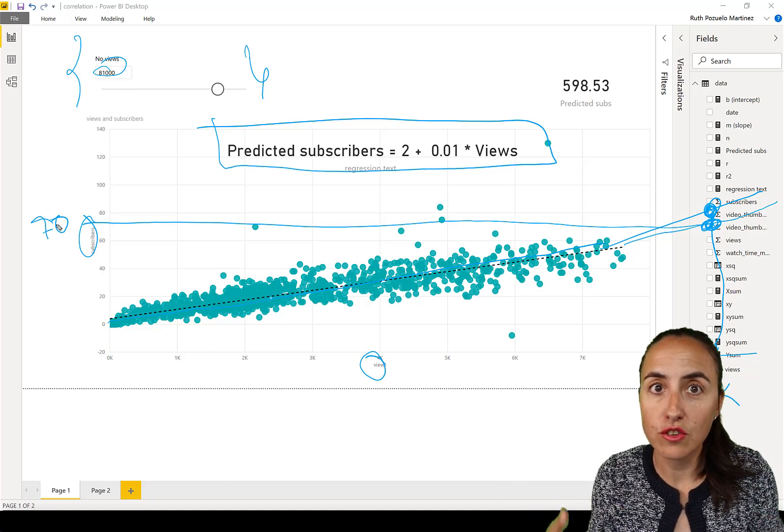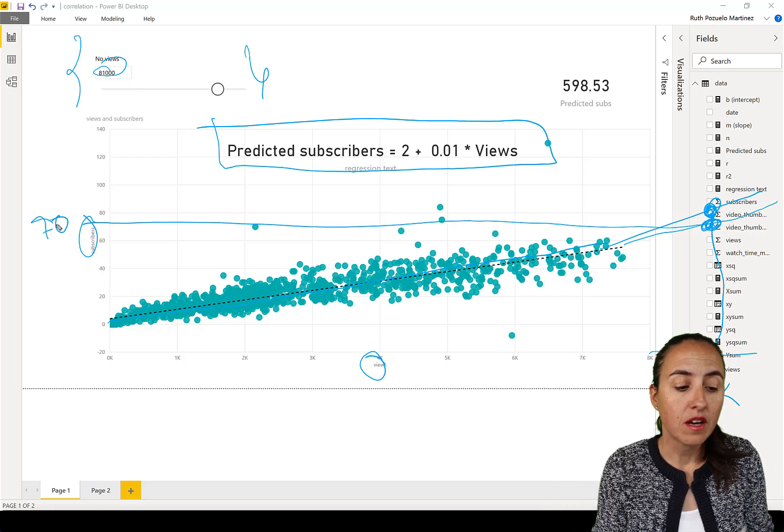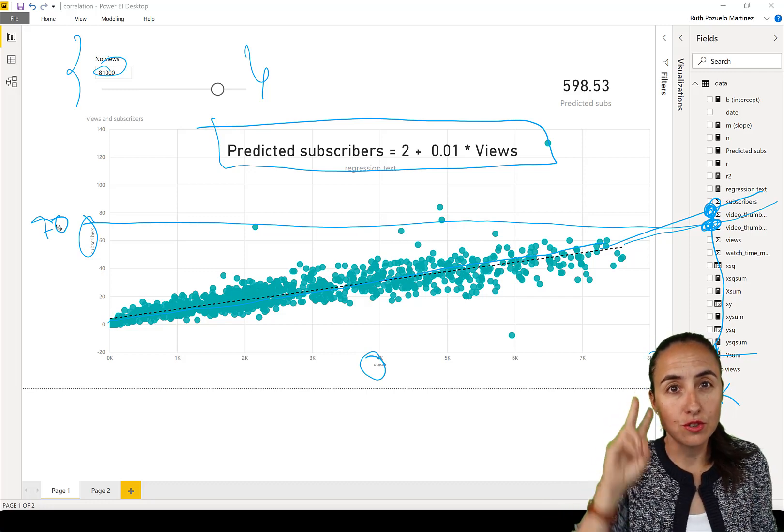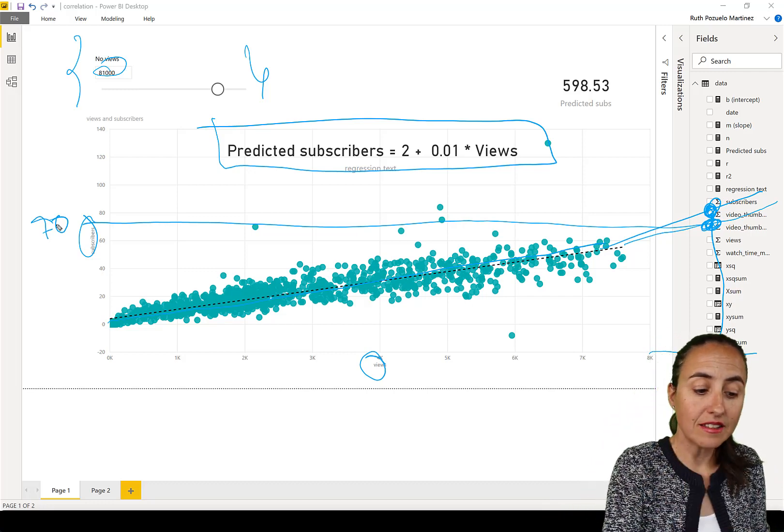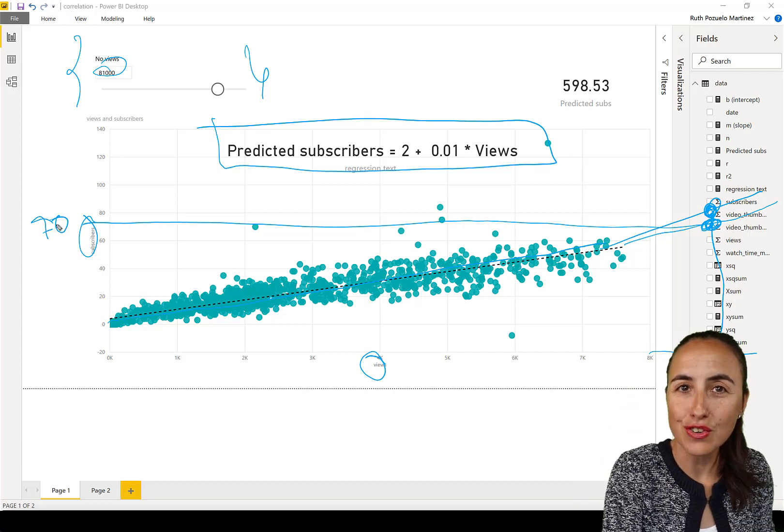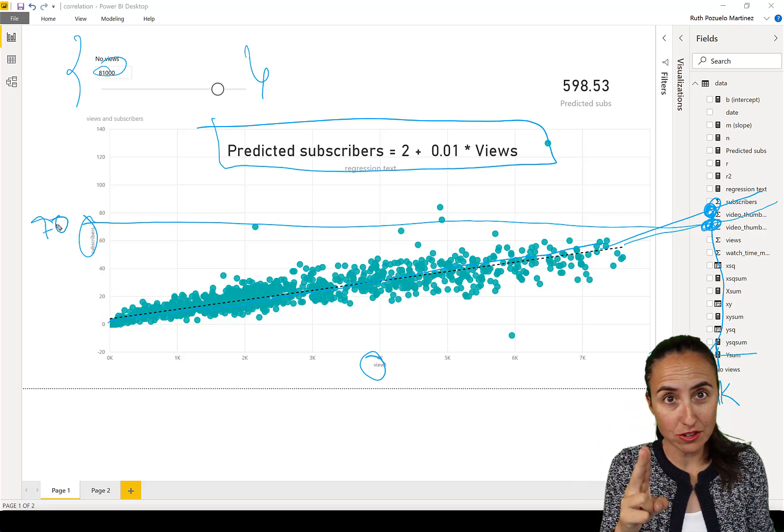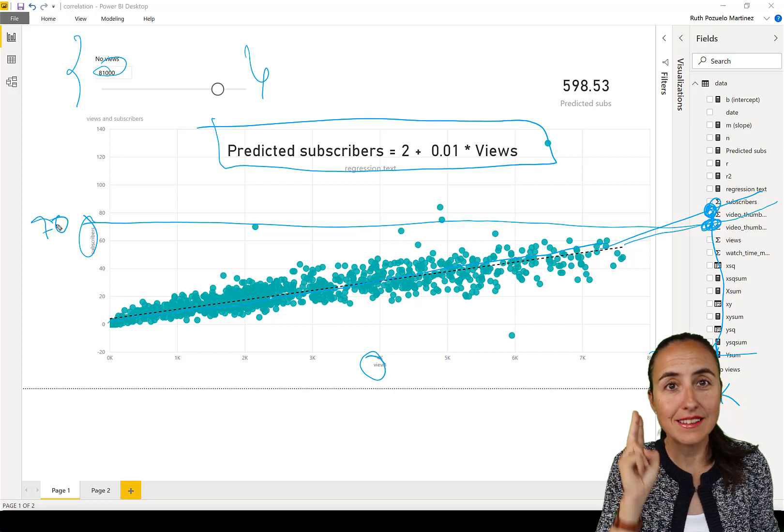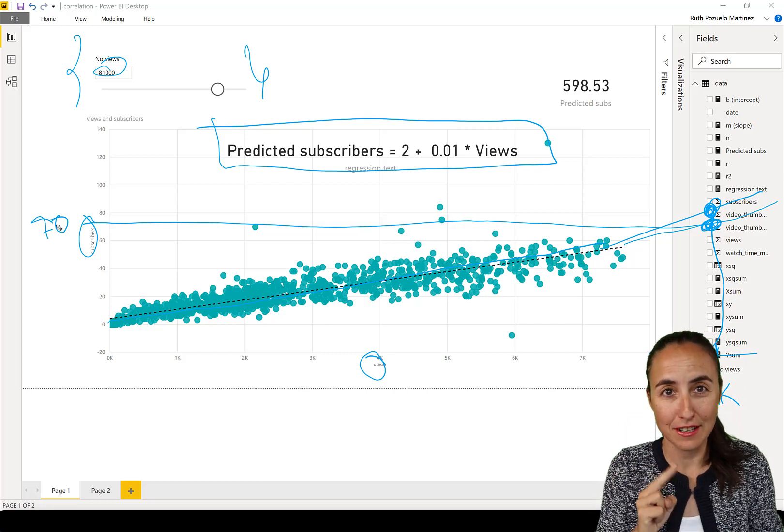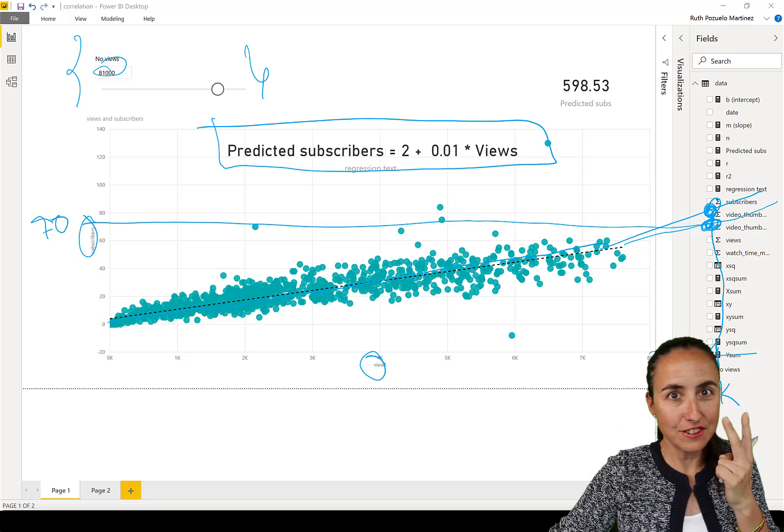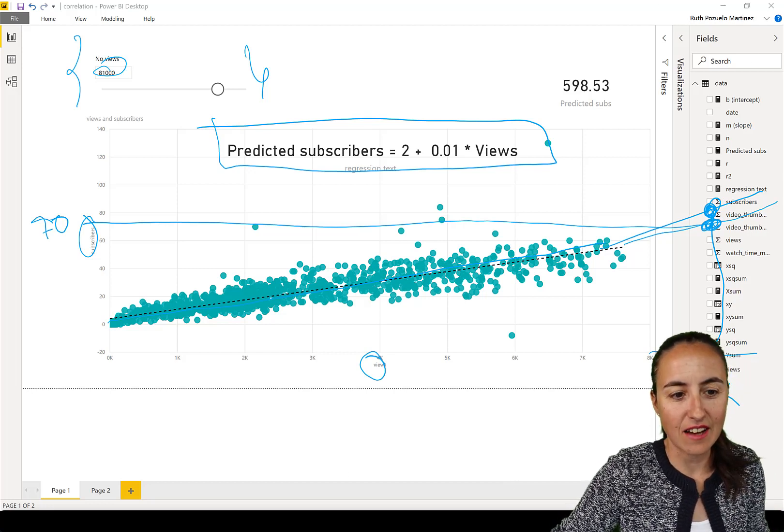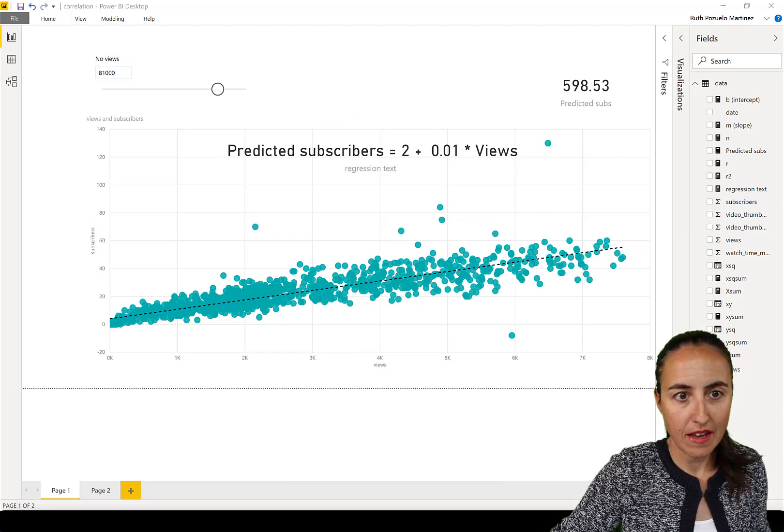Now, what is correlation useful for? Well, correlation allows you to do two things. It tells us how strong the relationship is between those two variables and it tells us the direction of the relationship. So two things. Let's check it out.